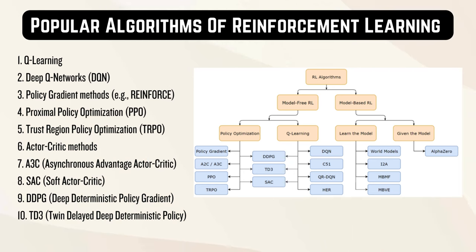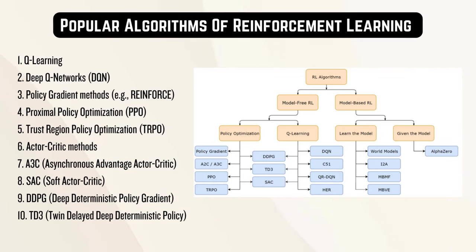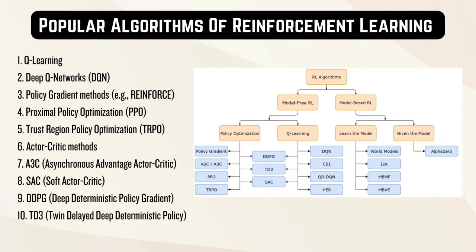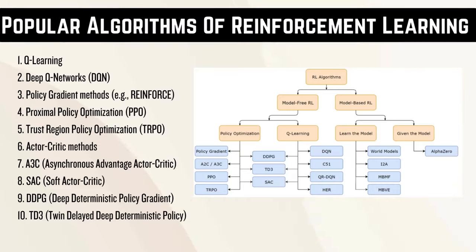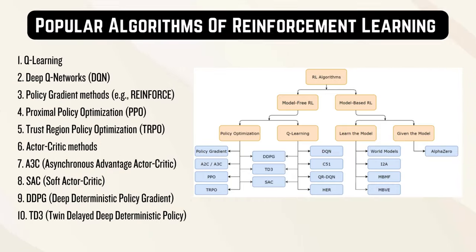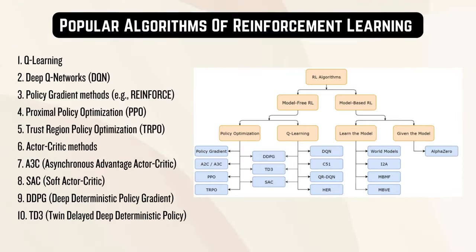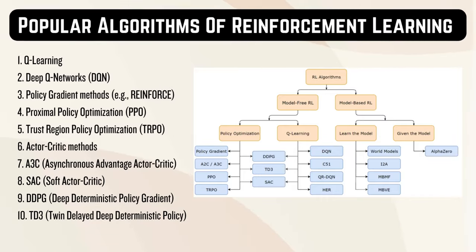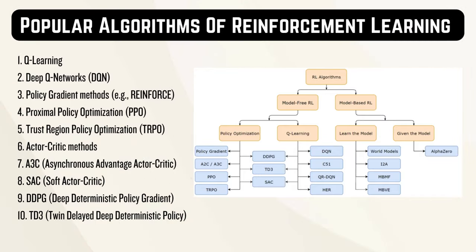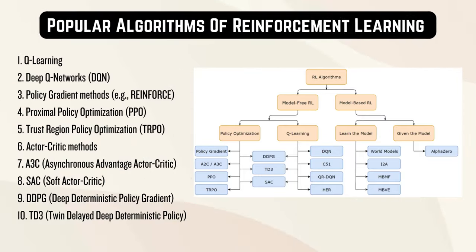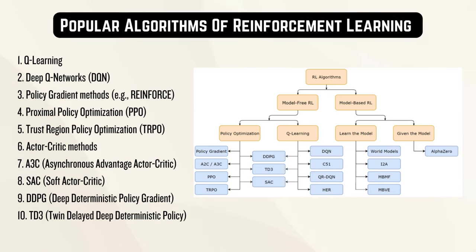Q-Learning, Deep Q-Networks (DQN), Policy Gradient Methods (e.g., Reinforce), Proximal Policy Optimization (PPO), Trust Region Policy Optimization (TRPO), Actor-Critic Methods, A3C (Asynchronous Advantage Actor-Critic), SAC (Soft Actor-Critic), DDPG (Deep Deterministic Policy Gradient), TD3 (Twin Delayed Deep Deterministic Policy).